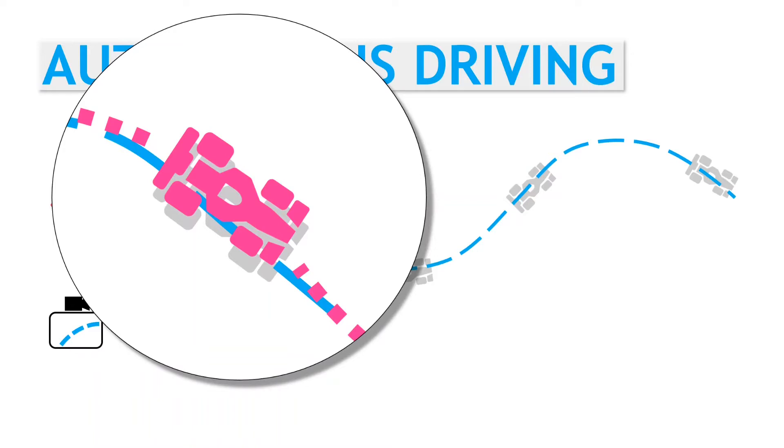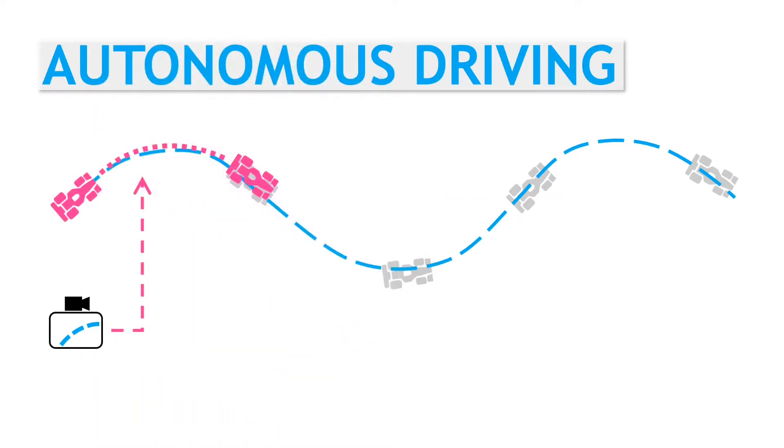And the cycle repeats. The autonomous vehicle grabs another image from the camera. This time, however, the image it captures will be a little different to what the expert's camera sees, as the vehicles are in slightly different positions.